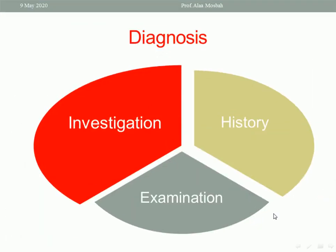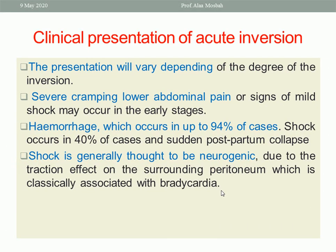The diagnosis includes clinical presentation, history and examination, and also investigations like ultrasound and MRI. The clinical presentation differs between acute and chronic inversion. In acute inversion, the patient usually complains of lower abdominal cramping pain — sometimes mild, intermittent — depending on the degree of inversion.